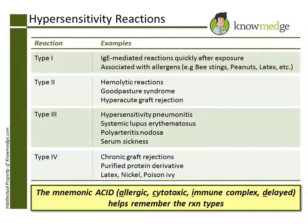Choice D: Arthritis in which anti-CCP antibodies are the most specific test is describing rheumatoid arthritis. These patients will have immune complex or Type 3 hypersensitivity. Choice E: Allergic rhinitis is a Type 1 hypersensitivity reaction.